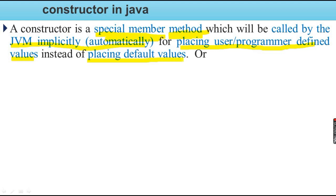When the object is created, during that time the values are initialized. The default values are assigned — for example, String is null and integer is 0.